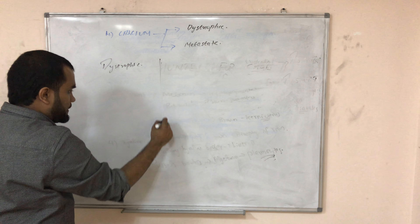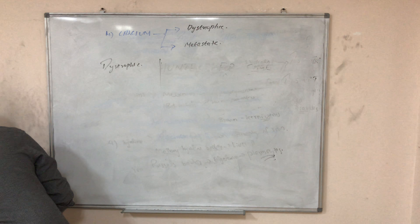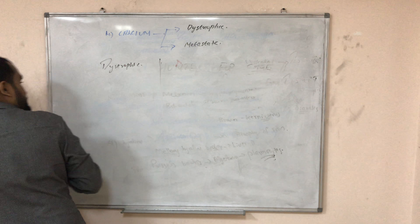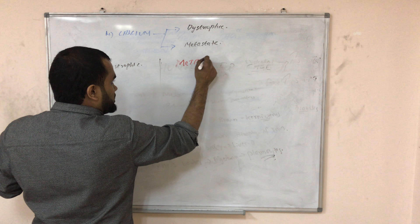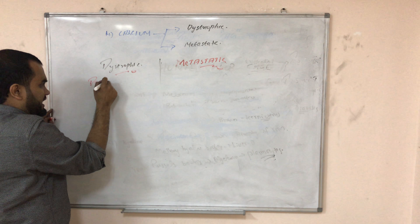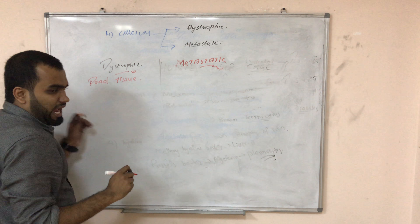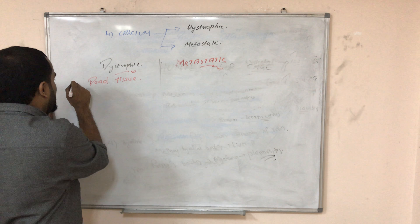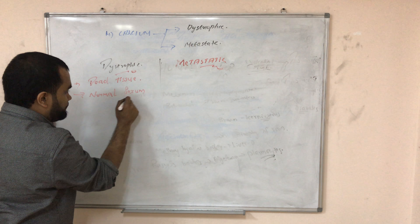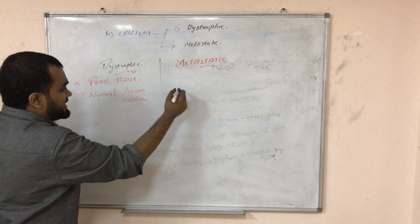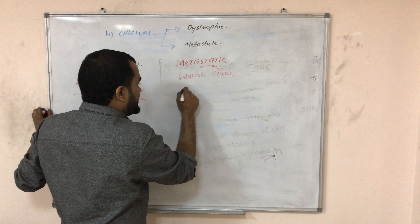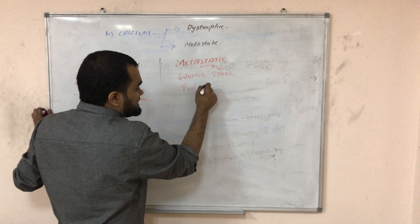The difference between dystrophic and metastatic calcification: dystrophic occurs in dead tissue — such as after necrosis — and serum calcium will be normal. Metastatic calcification occurs in living tissue and you will have increased serum calcium.